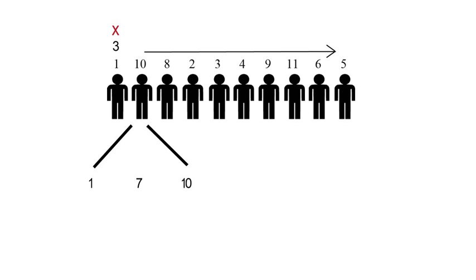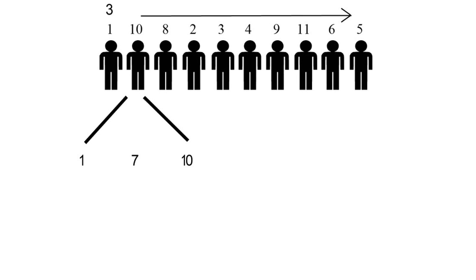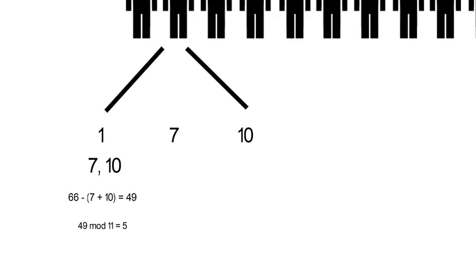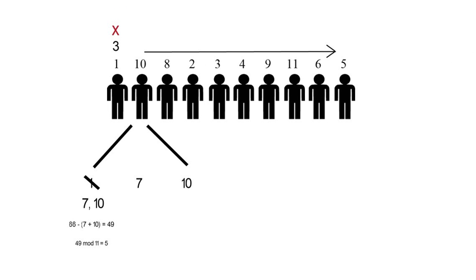And he can say to himself, okay, let's say I was wearing hat number one. What would the last guy see? He would look ahead and he will not see hats number seven and 10 because I'm wearing hat number one. So he will not see hats number seven and 10. In this case, he would make this calculation. He will calculate 66 minus seven plus 10. That's 49. And then he would calculate the modulo 11 and he will get five. But the guy, the last guy in the queue, he did not say five. He said three. So that means that I cannot be wearing hat number one. If I had been wearing hat number one, then the last guy would have said five and not three.